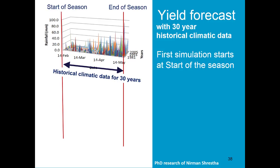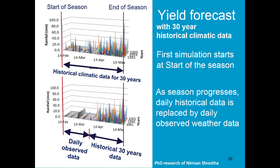At planting, a yield forecast was made with 30 years of historical climatic data. This results in a wide range of possible yields. As the seasons progress, the historical climatic data is replaced with daily observed data, and run with 30 years of historical climatic data for the remaining part of the season. The range of yield forecasts becomes smaller and smaller as the season progresses.